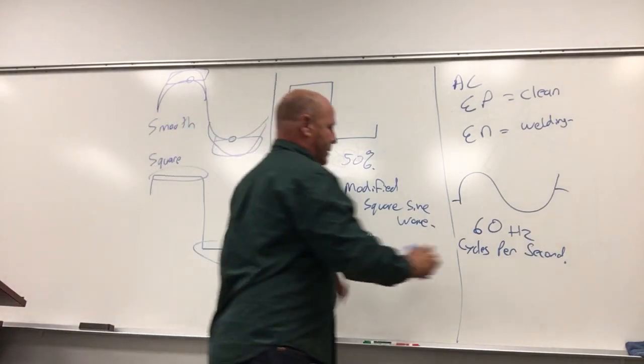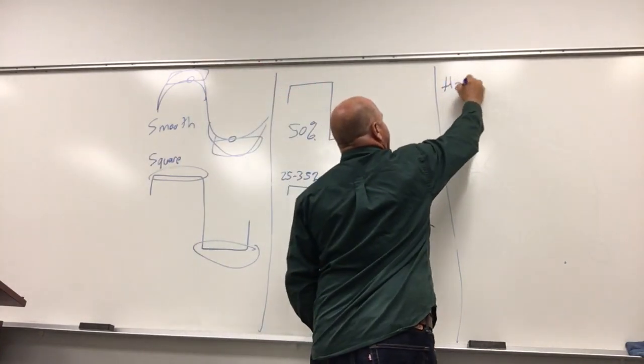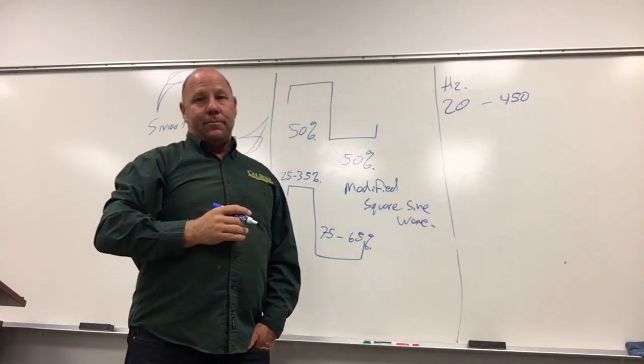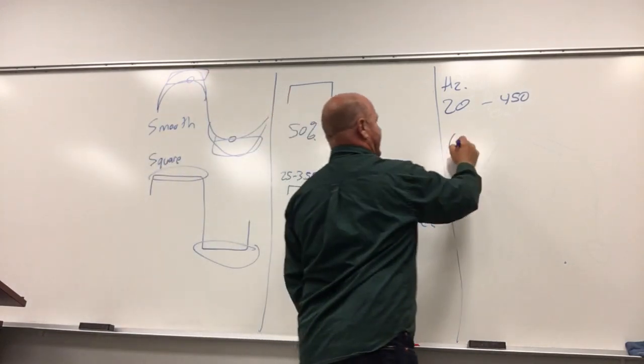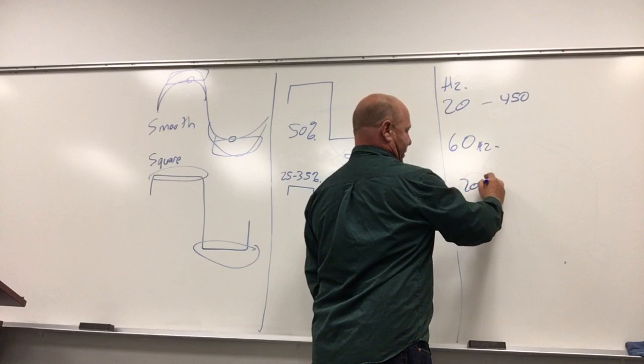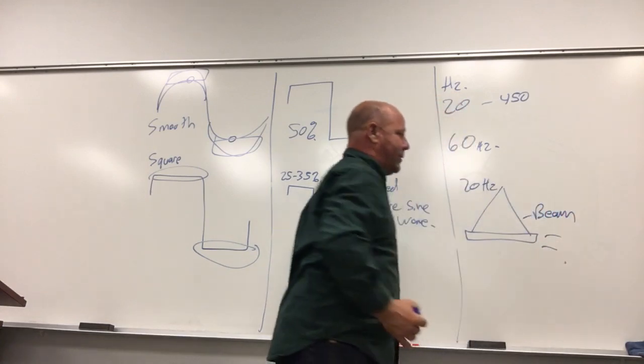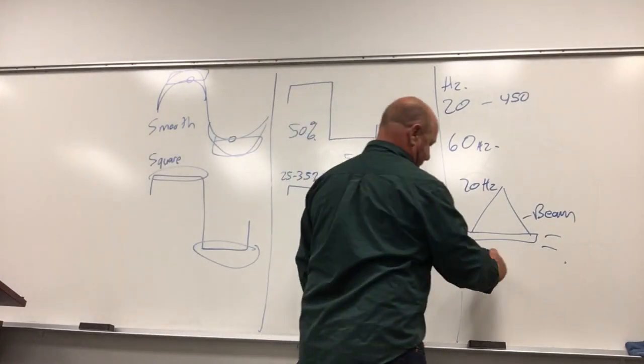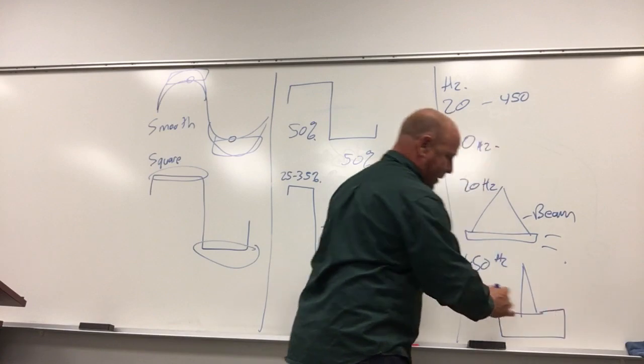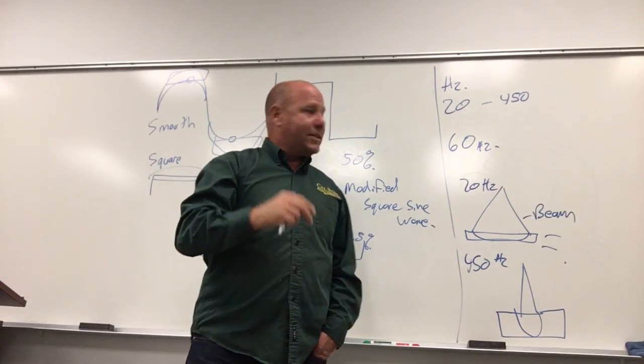Let's talk about the hertz now. The hertz is just complete sine waves per second. Our machines have pretty good adjustability on this. We can run 20 to about 450 on some of our machines. The hertz we have here in the States are 60 hertz. We're running that in the lab so it sounds normal. But why would we want to adjust the hertz? At 20 hertz, we're going to have a nice wide beam and really shallow penetration. At 450 hertz, we're going to have a very narrow beam with very deep penetration. So as the hertz go up, it focuses that beam, its energy down on that plate a little bit more.